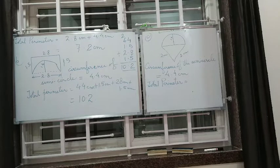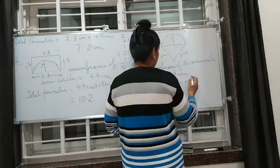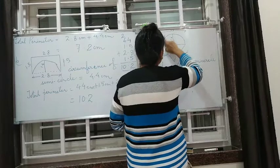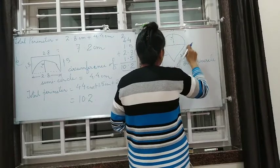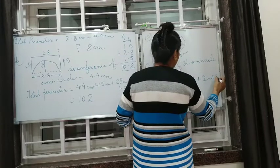Now we have to find the total perimeter. That is 4.4. This is 4.4. Then 2 plus 2. So 2 cm plus 2 cm.